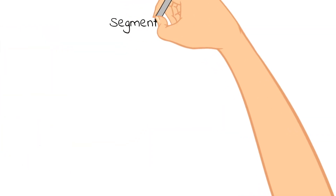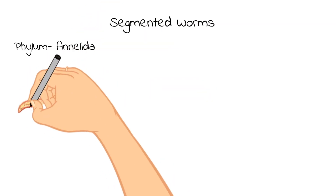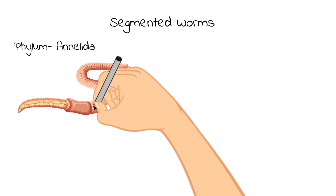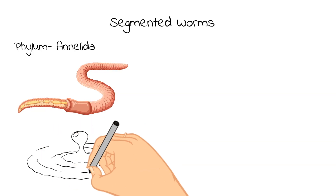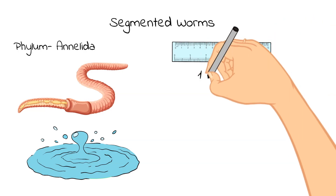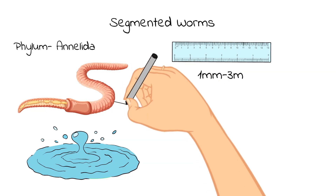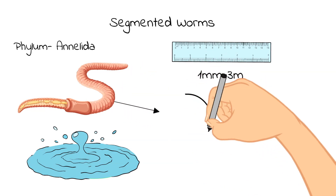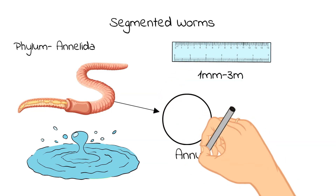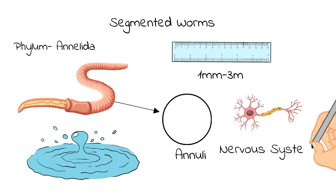Now, let's talk about segmented worms. These are all part of the phylum Annelida. You have probably seen a segmented worm before because this is where earthworms are found. Annelids mostly can only be found in wet environments, and some are even parasitic or mutualistic. Segmented worms can range in size from a few millimeters long to three meters long. All annelids are made of one or more body segments and have one or more rings, called annuli. Annelid worms are an animal that actually does have a nervous system.